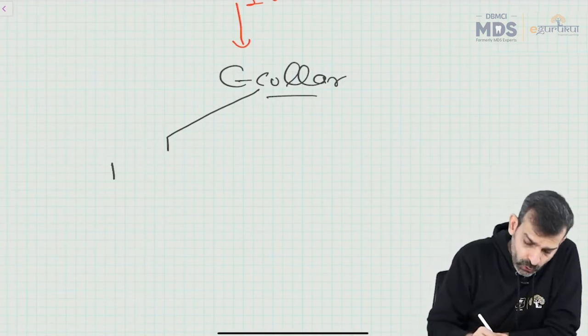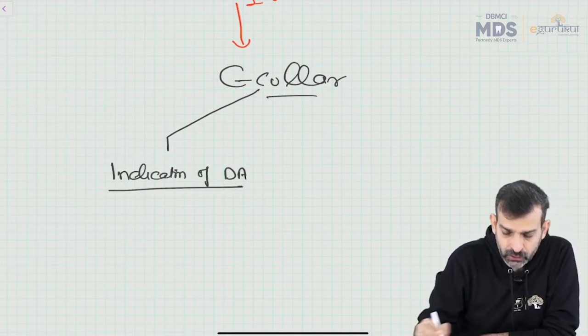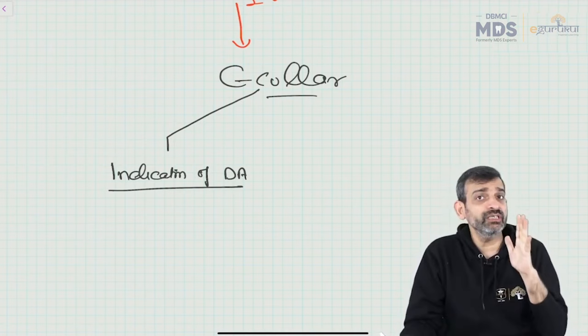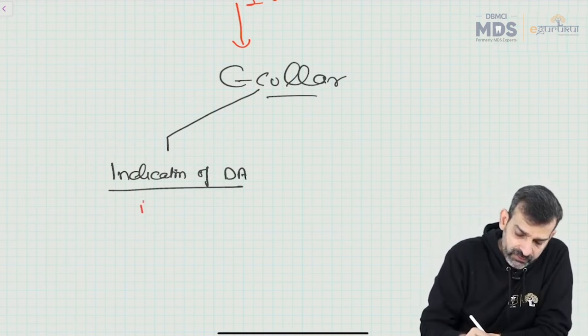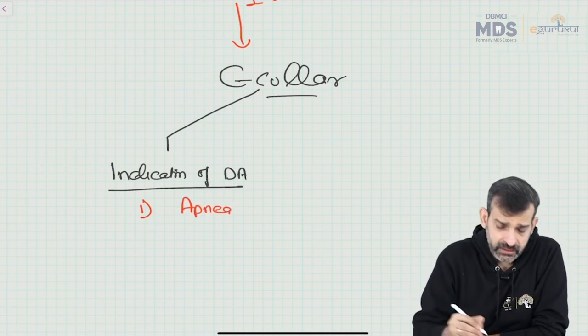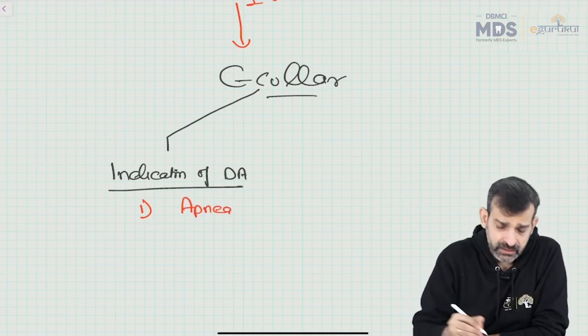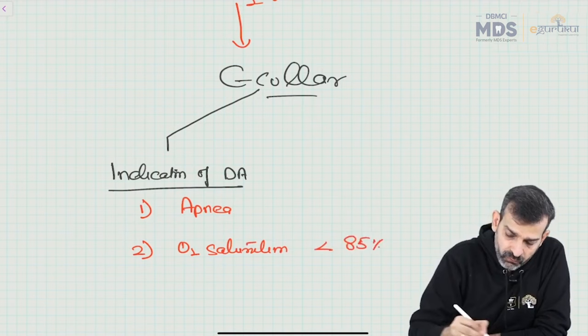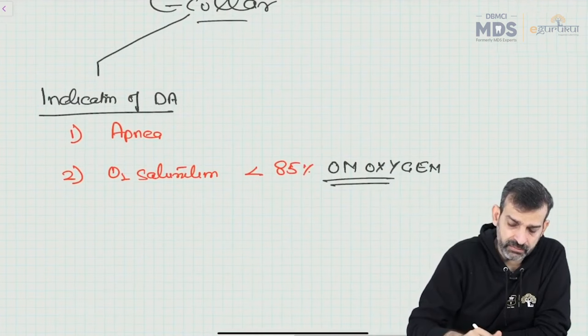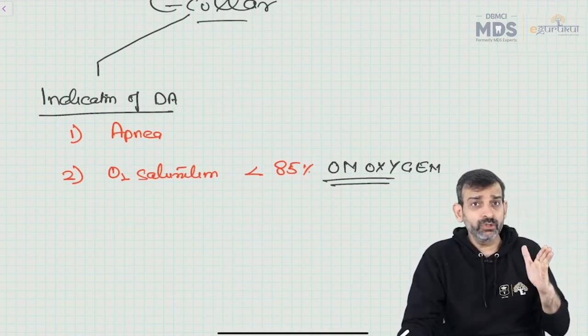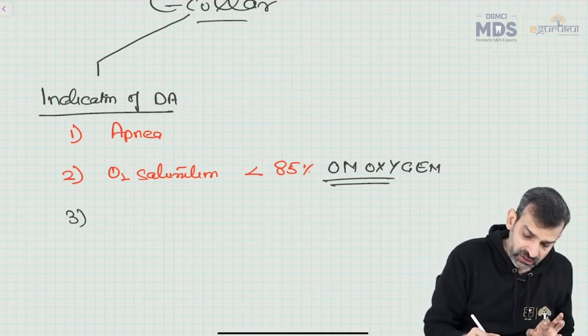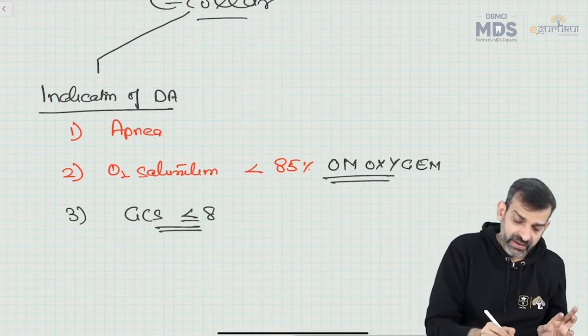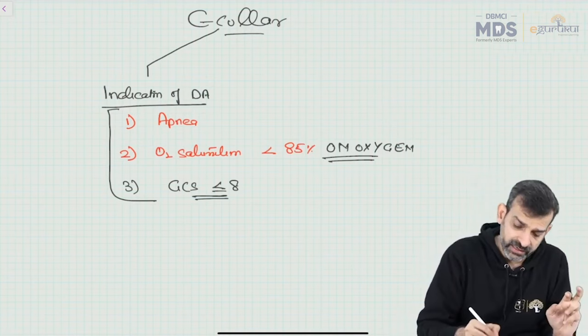You should know the indications of a definitive airway, because in any given exam question, if any of these indications are provided, your patient would require a definitive airway. The indications are: apnea, oxygen saturation less than 85% ON OXYGEN (this 'on oxygen' is important — write it in capitals), or GCS less than or equal to 8. If any of these are present, the patient needs not just airway support but definitive airway support.